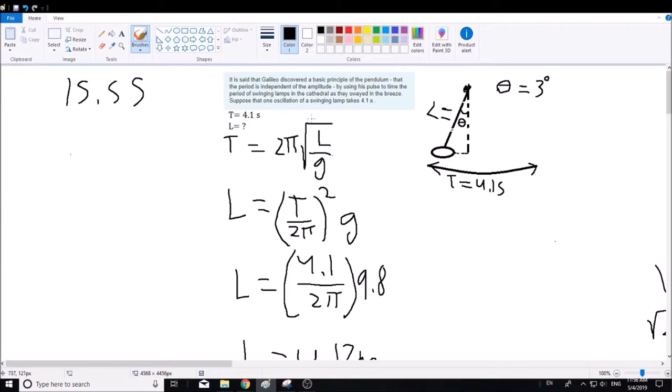For this problem we're given a pendulum that has a period of 4.1 seconds. Since we know that, we can use this pendulum equation, and we're trying to solve for the length of the chain that's holding up the lamp.